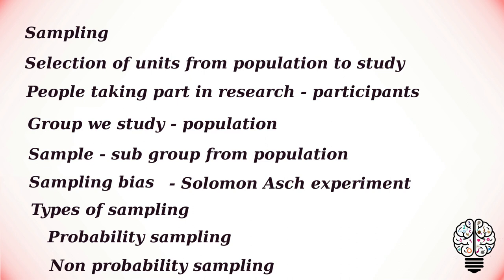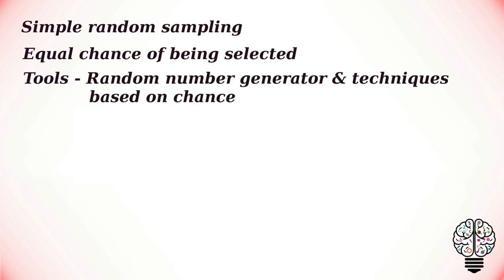There are four main types of probability sample. In a simple random sample, every member of the population has an equal chance of being selected, and your sampling frame should include the whole population. To conduct this type of sampling, you can use tools like random number generators or other techniques based entirely on chance. For example, if we want to select a sample of 10 students from a 7th grade class of 40 students, we can write the names or roll numbers of each of the 40 students on separate slips of paper — all equal in size and color and folded in a similar way — place them in a box, shuffle thoroughly, and then select.